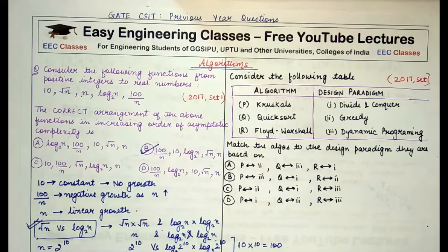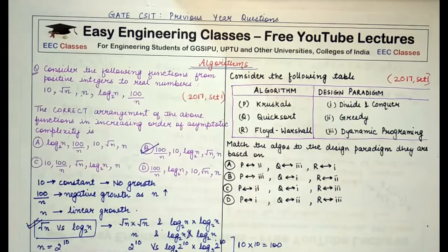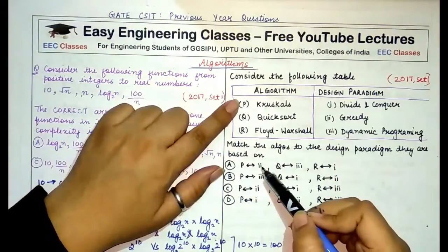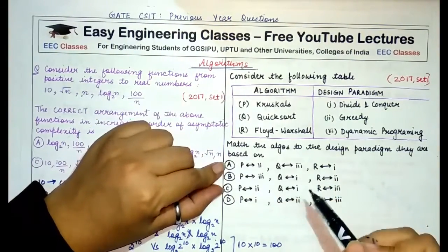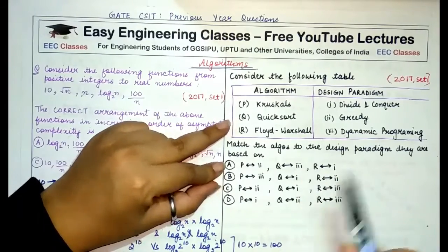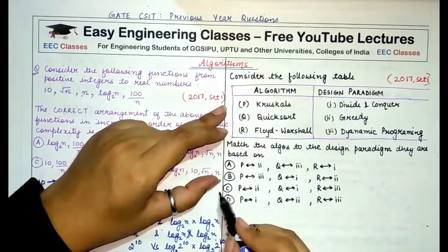In the case of quicksort, we divide the entire input array into different parts and then solve each part recursively, so it is a divide and conquer technique. Floyd-Warshall algorithm is a dynamic programming technique. So the answer is: P matched with 2, Q matched with 1, and R matched with 3. The correct answer is C.